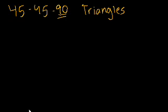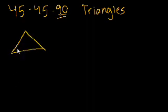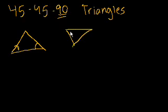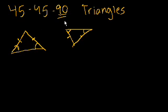So why are these triangles special? Well, if you saw the last presentation, I gave you a theorem that said if two base angles of a triangle are equal, then the sides that they don't share are going to be equal. So what's interesting about a 45-45-90 triangle is that it is a right triangle that has this property.